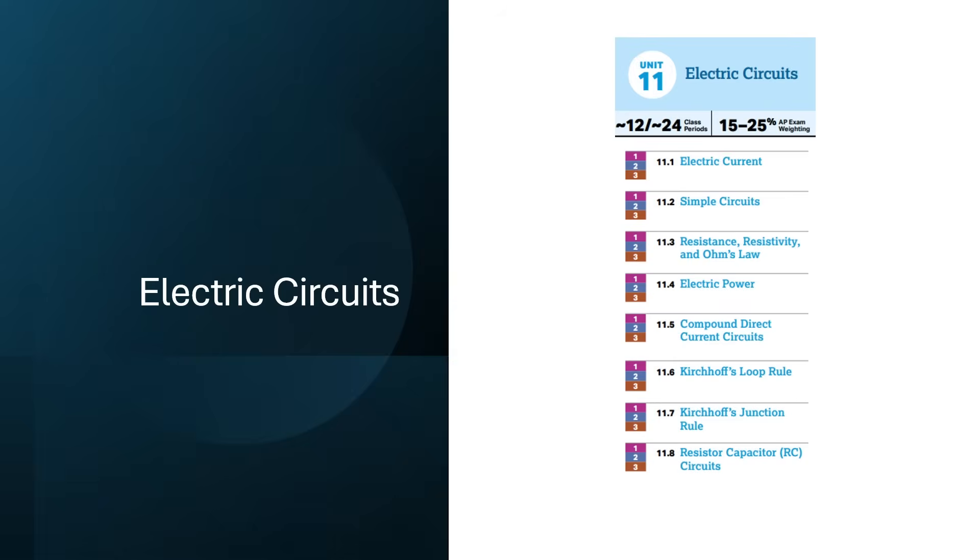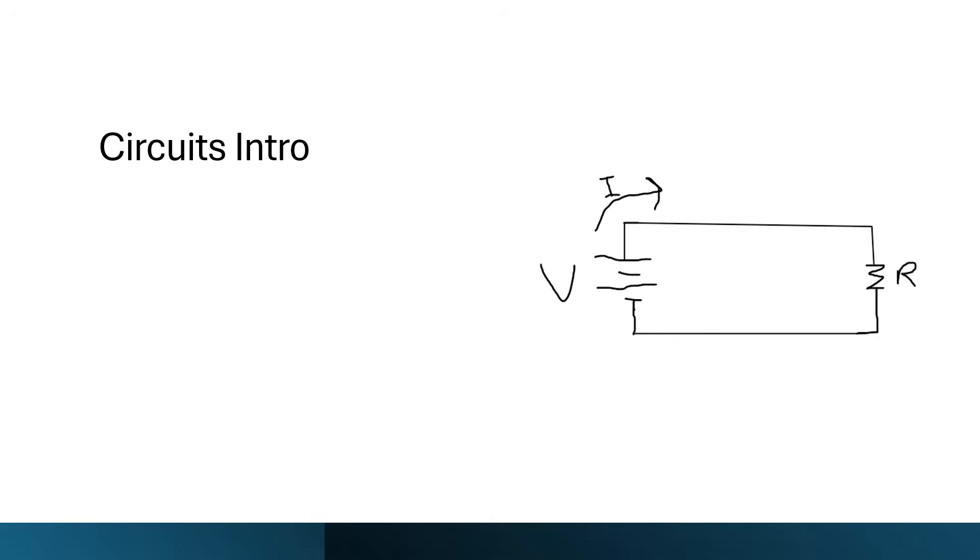Now we're going to look at electric circuits. Let's start off with some basic definitions. Current is the rate charge flows, or the derivative of charge with respect to time. Kirchhoff's junction rule says that the current in equals the current out, or current is conserved. Resistance is a measure of how hard it is for current to pass through an object. Resistance is proportional to length over cross-sectional area.